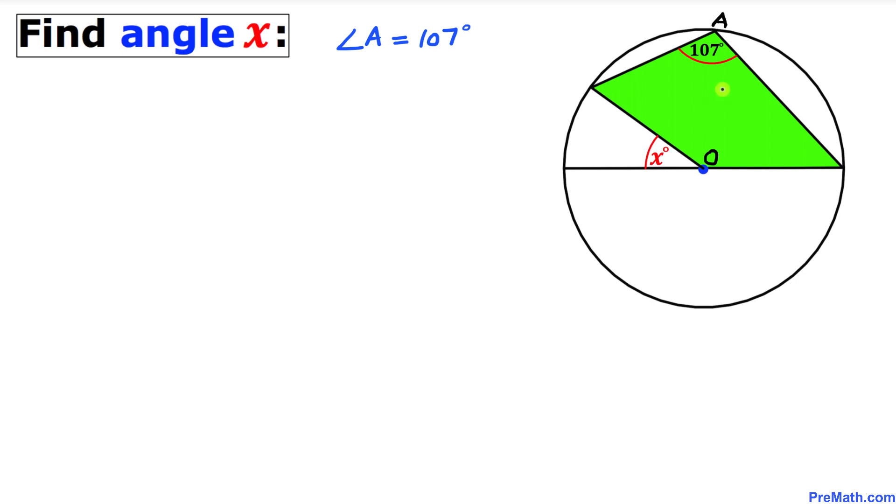Angle A is 107 degrees, and the center of this circle is O. Now we are going to calculate angle x, as you can see over here. So let's get started with the solution. Here's our first step.